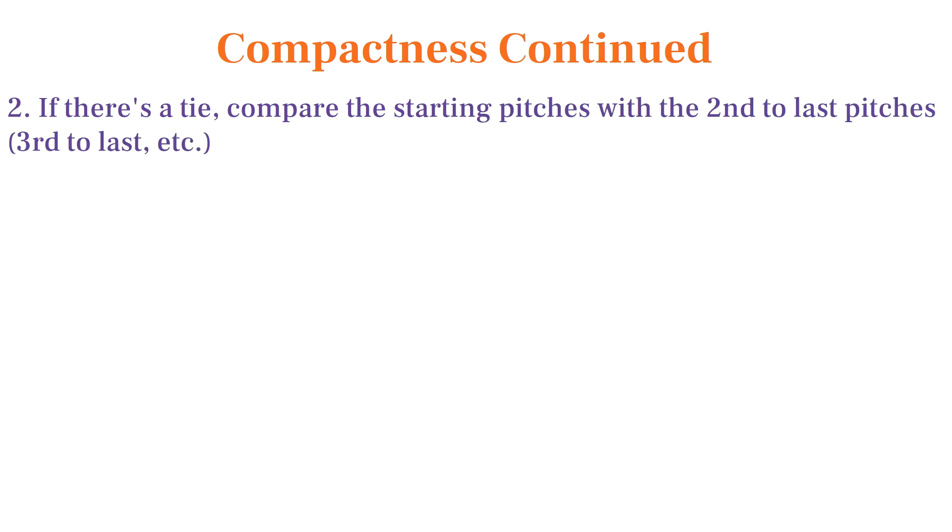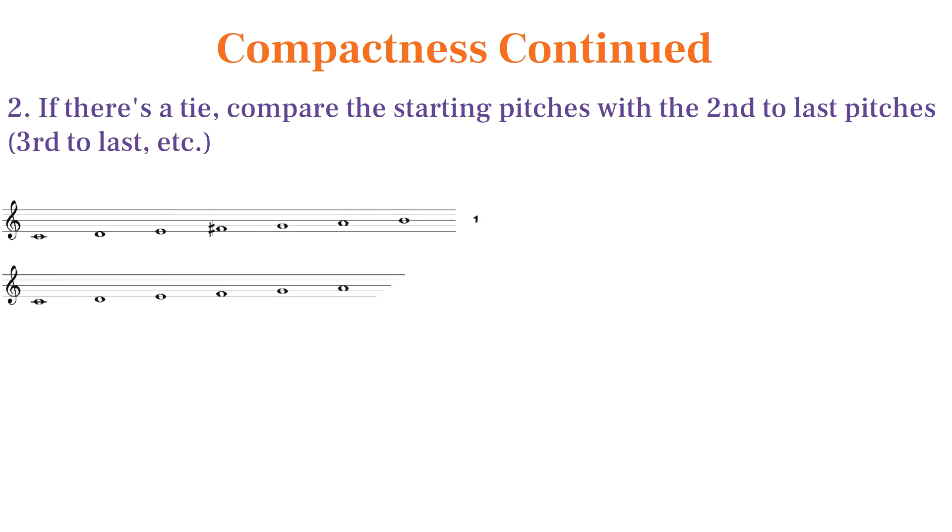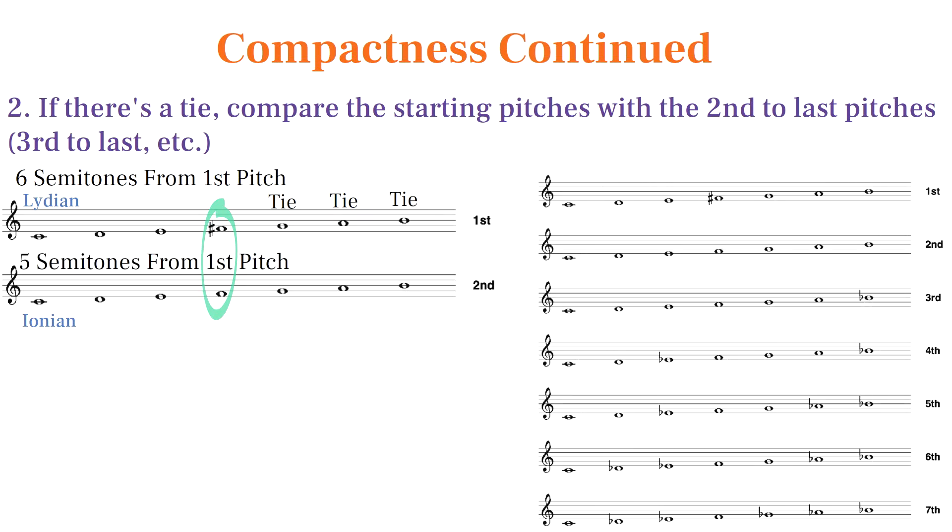If there's a tie between the first and last pitch of a set, we compare the starting pitch to the second to the last pitch of each scale, and if ties continue, we continue comparing earlier pitches. The Lydian mode is the most spread out mode of the major scale. Comparing the last three pitches between the Lydian scale and the major scale, we get ties, but the distance between their fourth scale degree is larger in the Lydian scale, making it first in the ranking of modes in the major scale set.